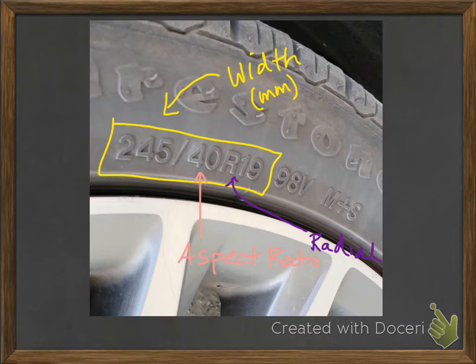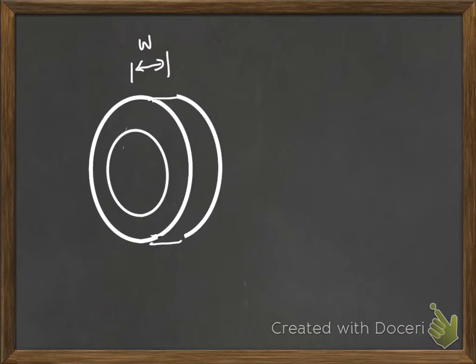The final thing that we're interested in is this 19. So the 19 is the diameter of the rim. It's not the diameter of the entire wheel, it's just that's how big the inside part of your rubber needs to be. So it's right here. I'm going to call it Dr for diameter of the rim.